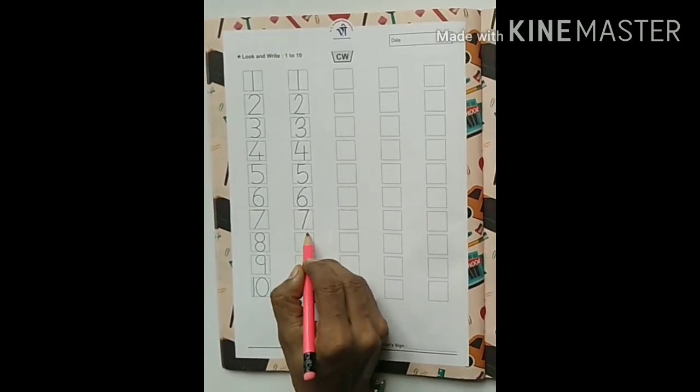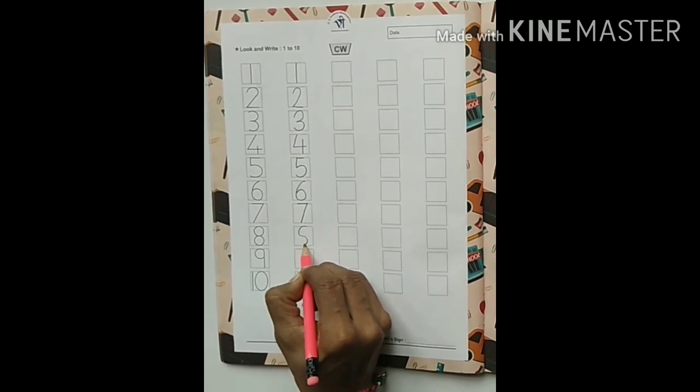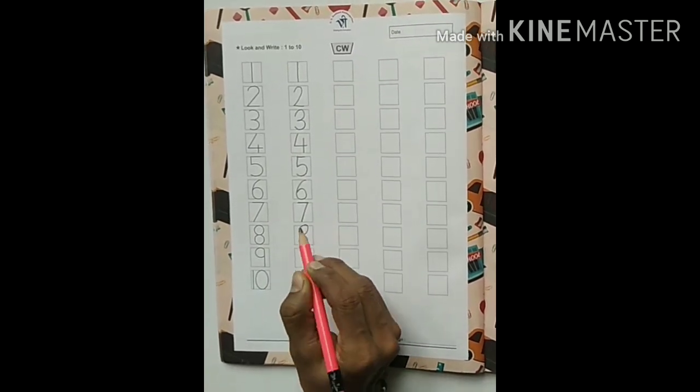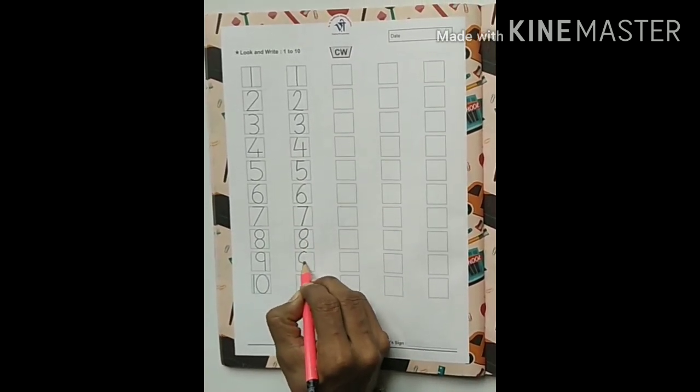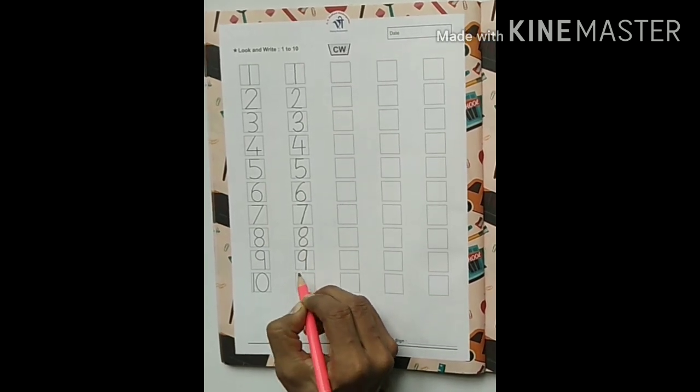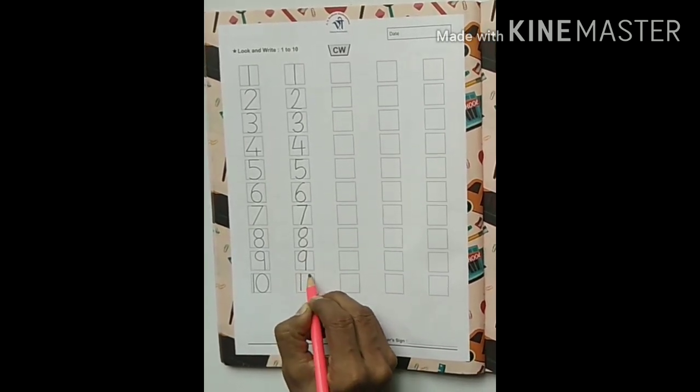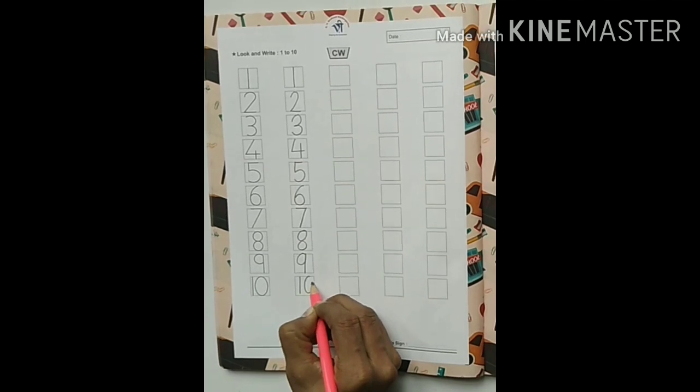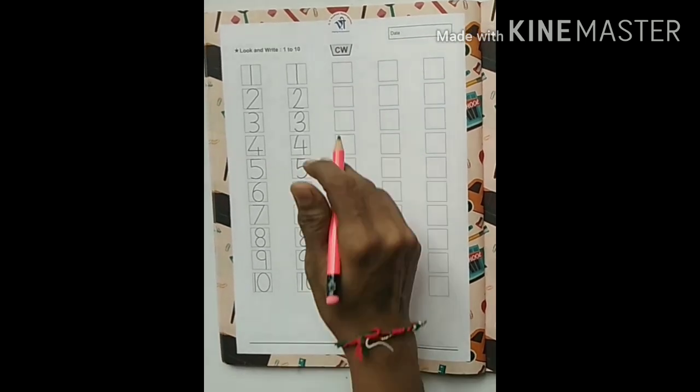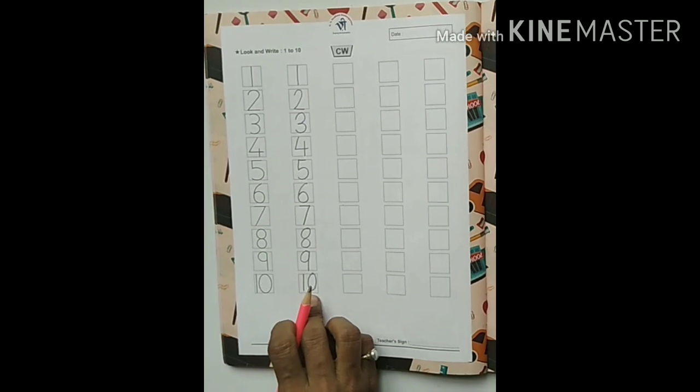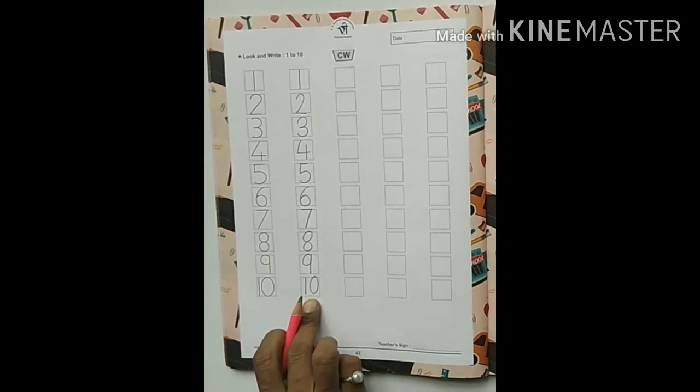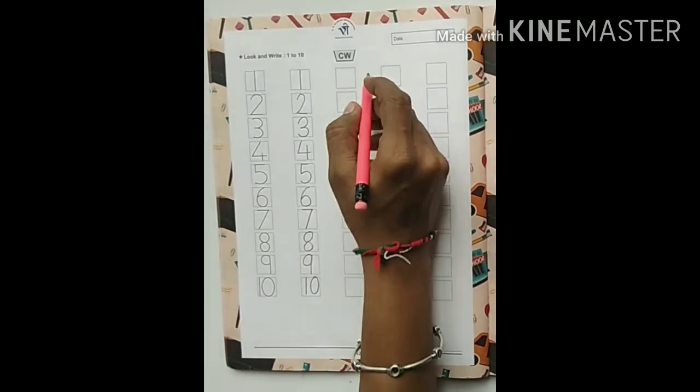7, 8, 9, and 10. Here we have to write 1 to 10 numbers continuously. Let's start again.